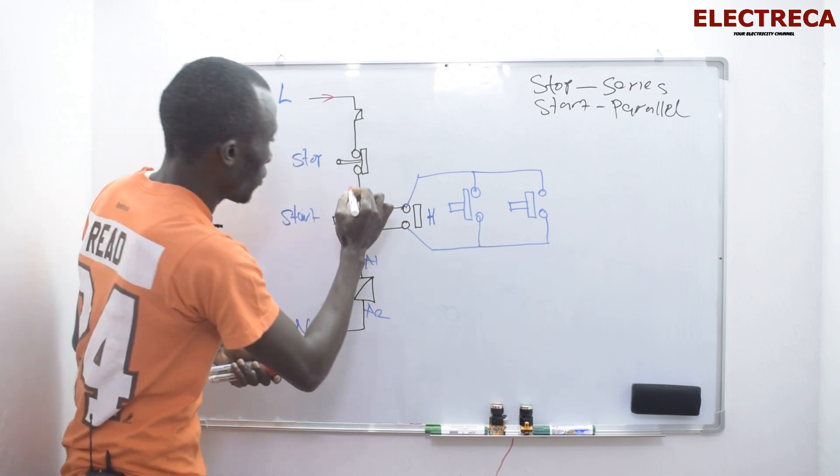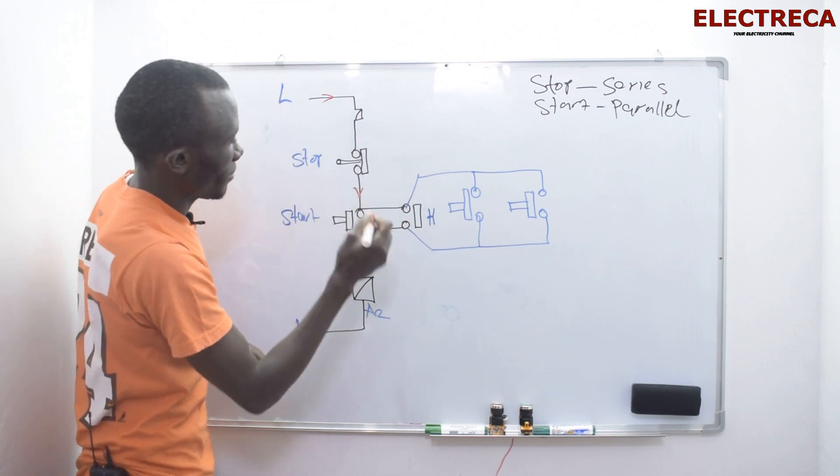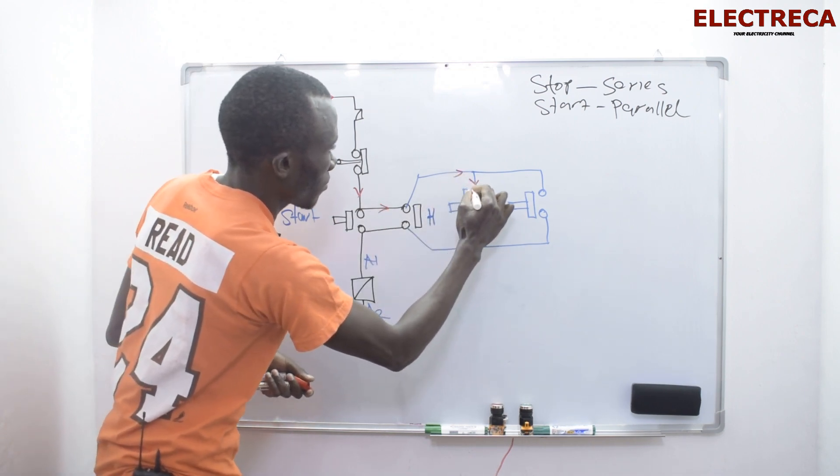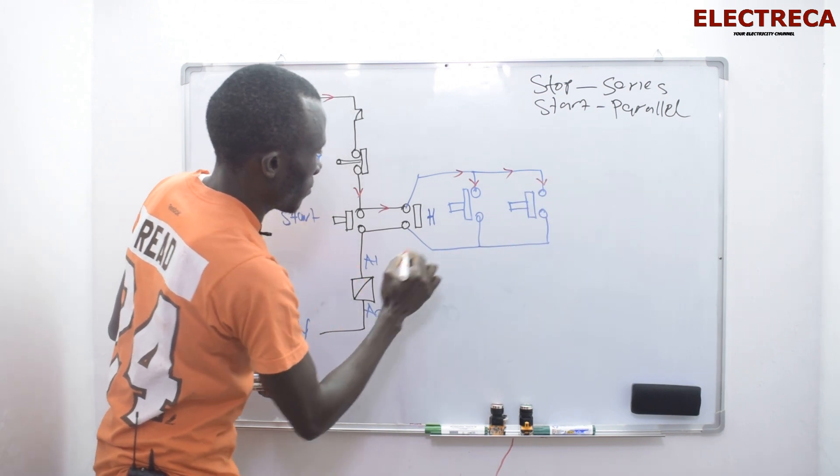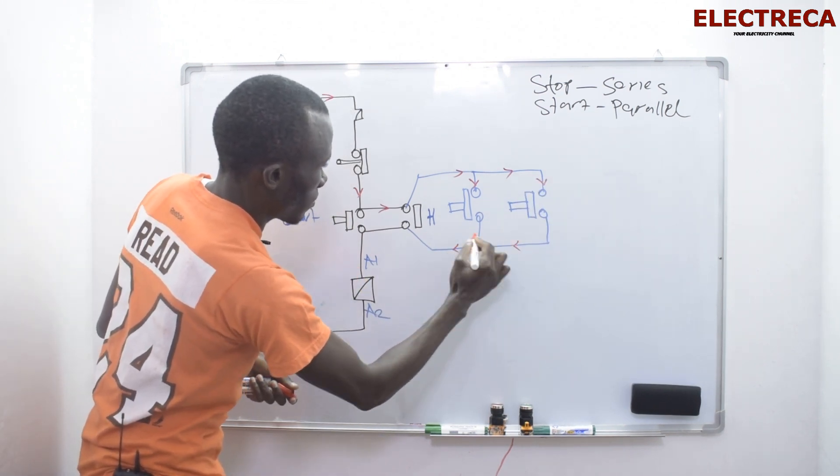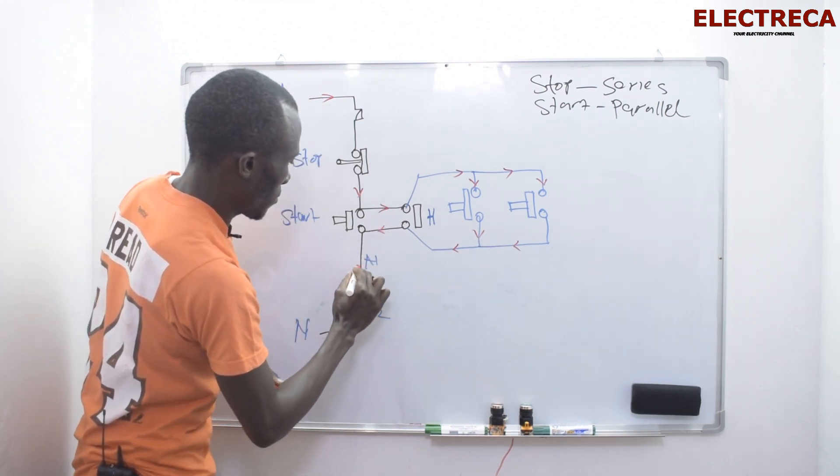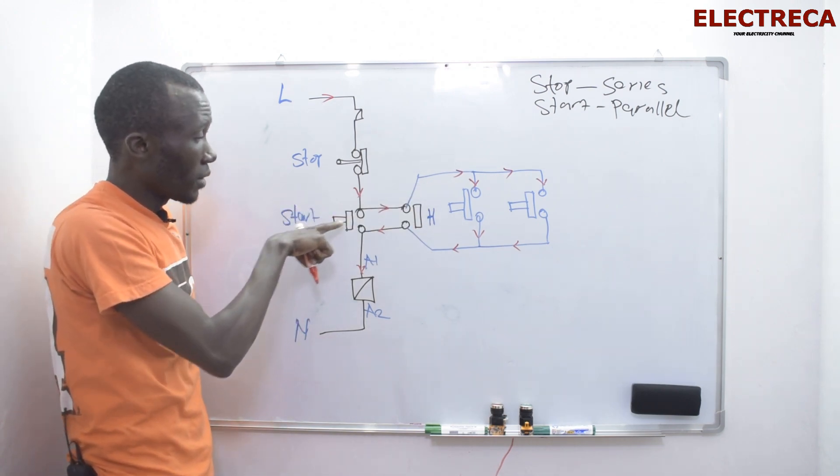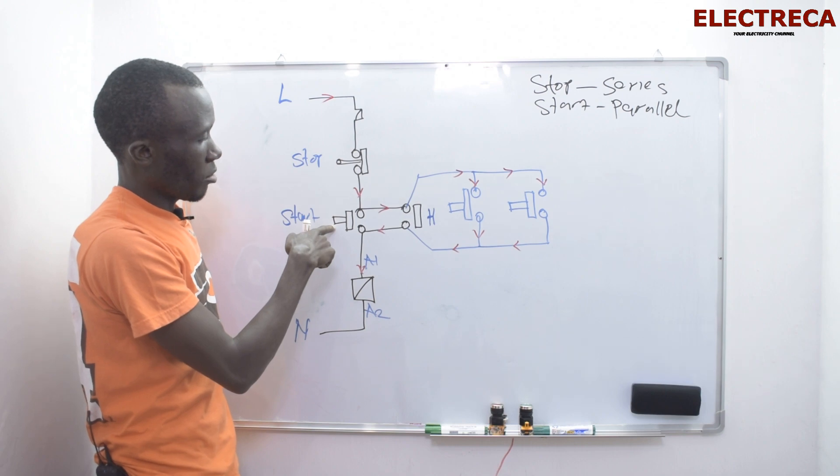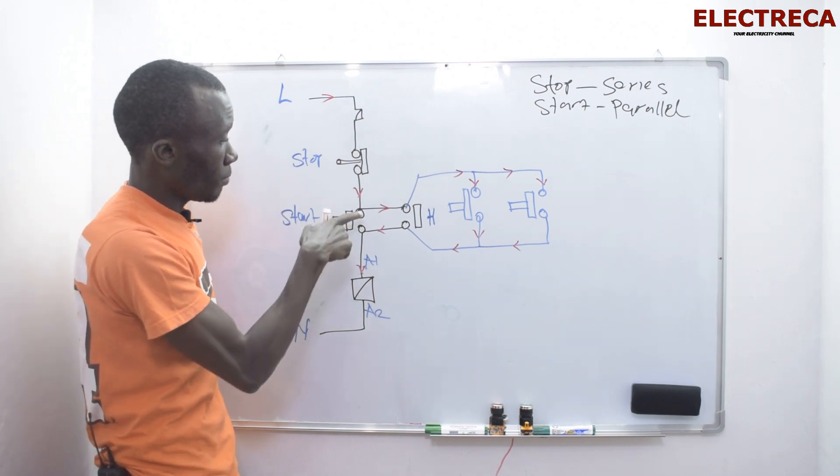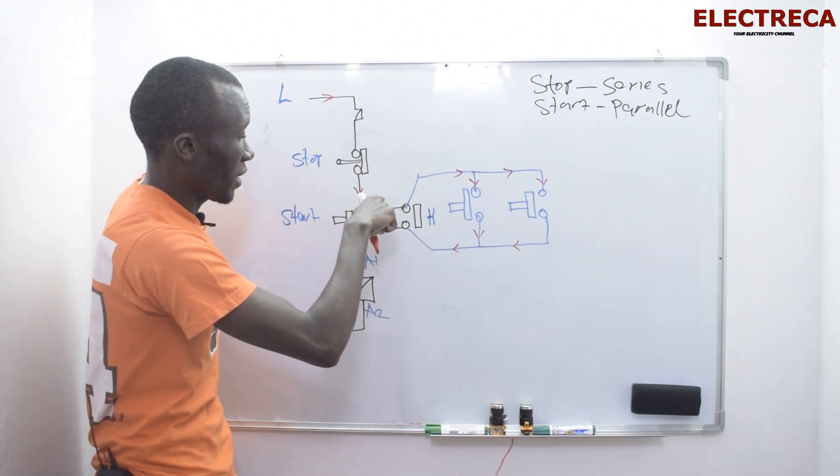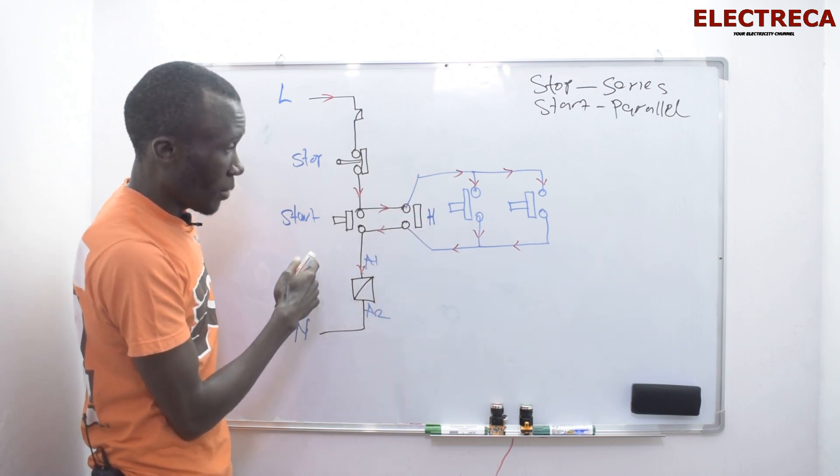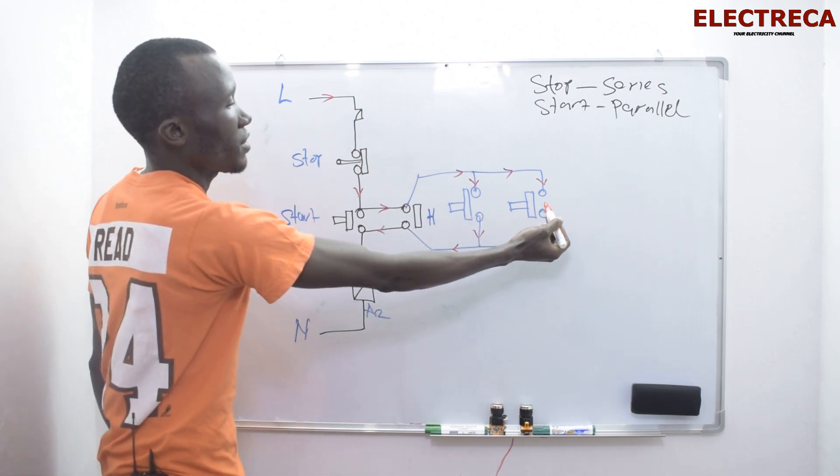And if you see here we have our current that goes through the stop. This is it, you have your current that pends here. So if you press here, definitely our current will move. It will either pass here or it will pass this side.